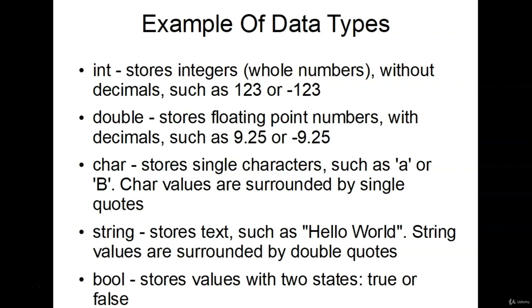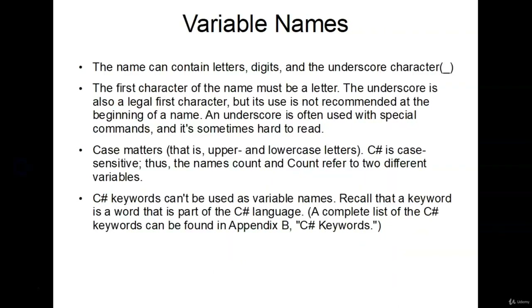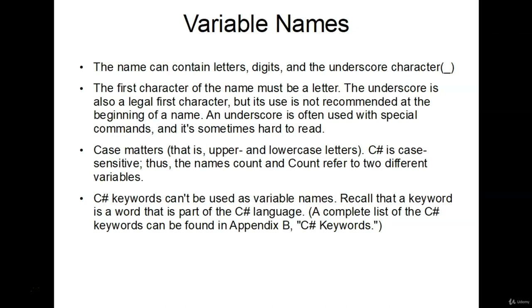After we declare our data type, the next thing to do is name your variable. A few rules for naming: the name can contain letters, digits, and an underscore character. The first character must be a letter — we can't use numbers or special characters. Case matters: uppercase MyVariable is different from lowercase myVariable. Lastly, C# keywords can't be used as variable names. After this video, there'll be a resource page with all reserved C# keywords, which are strictly off limits.